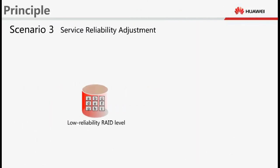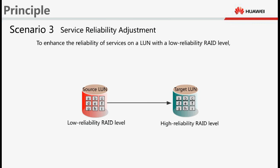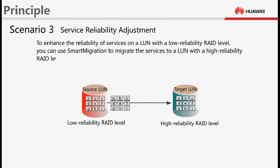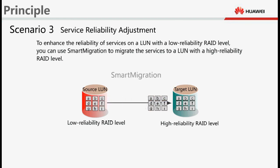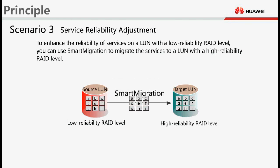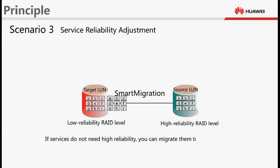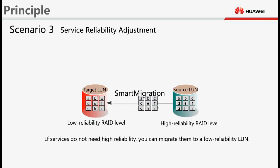For service reliability adjustment, to enhance the reliability of services on a LUN with a low-reliability RAID level, you can use Smart Migration to migrate the services to a LUN with a high-reliability RAID level. If services do not need high reliability, you can migrate them to a low-reliability LUN.